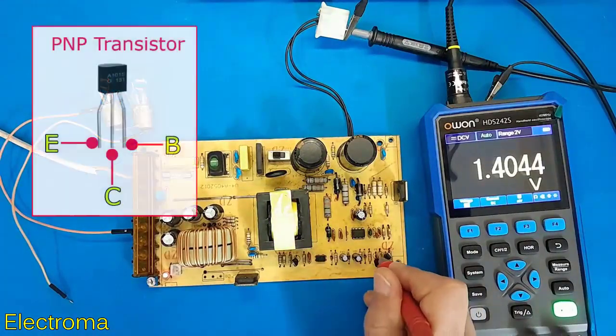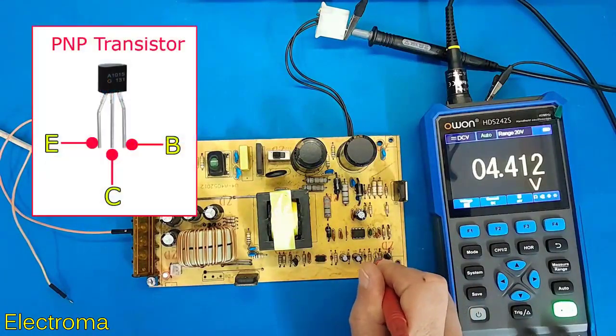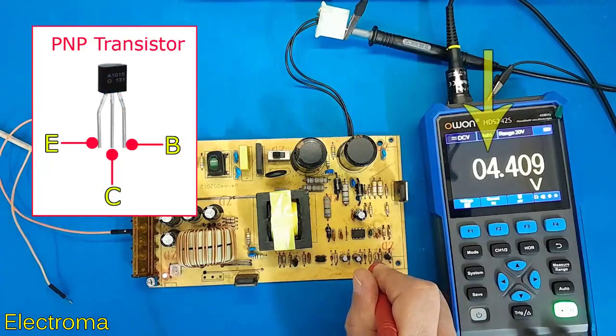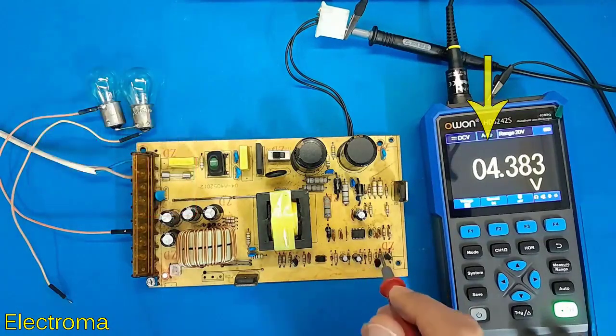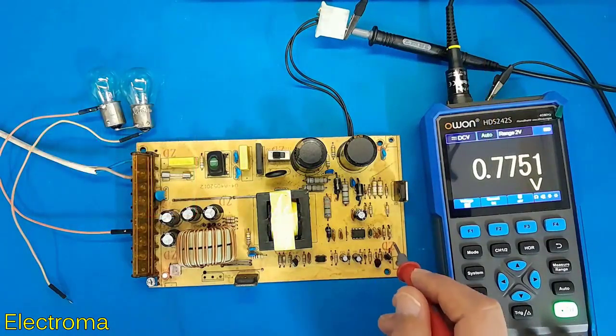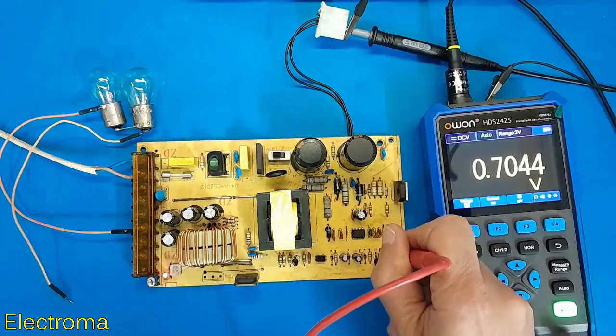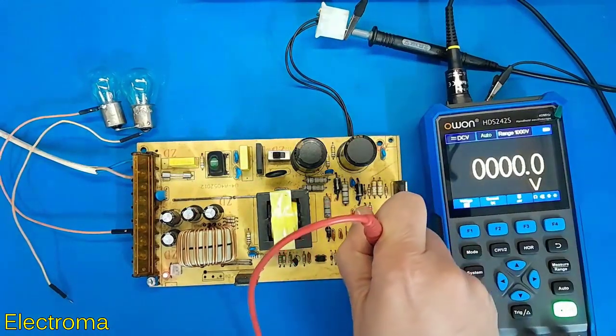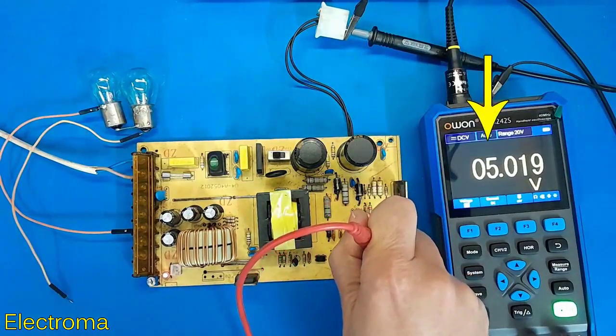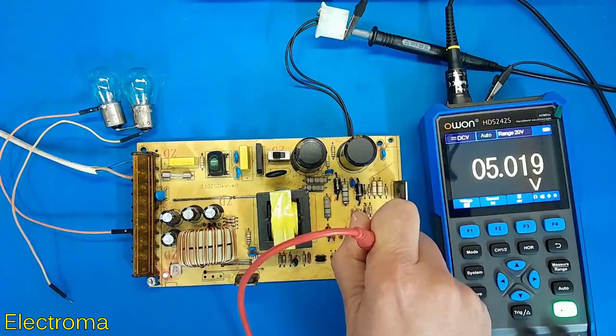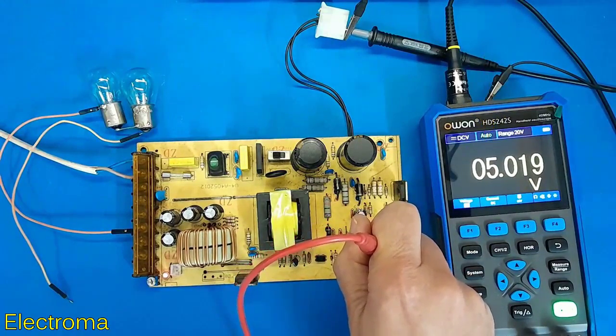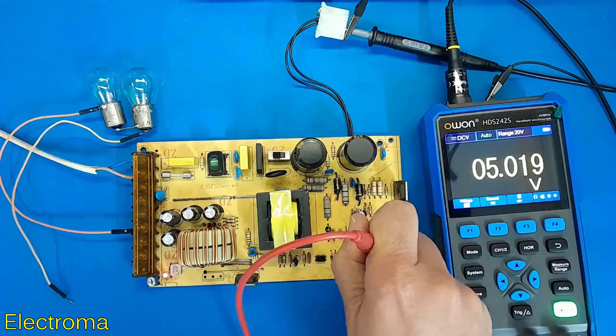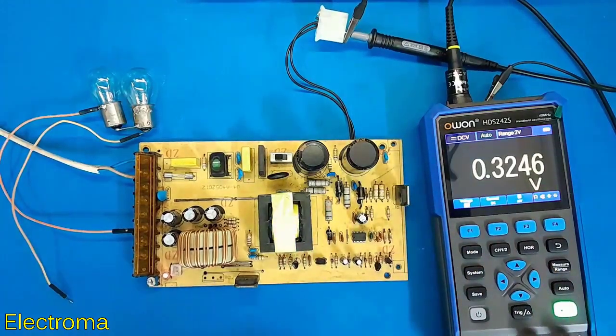I measure the base pin, around 4 volts. I choose the base pin of the second transistor, around 5 volts. Since these are PNP transistors, the presence of voltage in the base pin indicates that they are off.